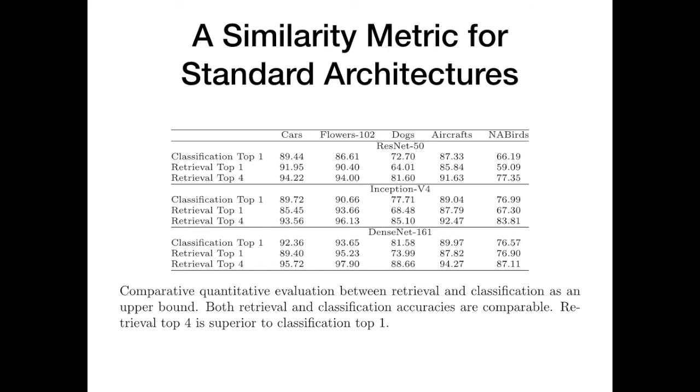Next, we quantitatively compare the classification and retrieval performance. The classification performance is an upper bound for the retrieval recall at one. Our recall at one is very close to the classification performance, while recall at four outperforms the classification performance consistently.